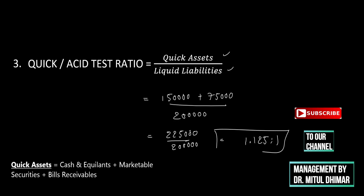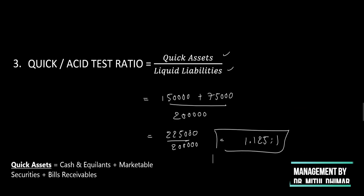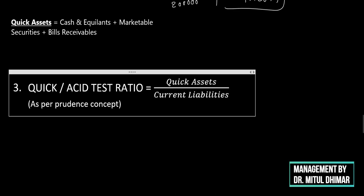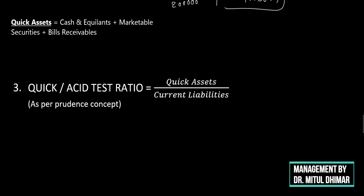Applying the prudence concept, the formula becomes quick assets divided by current liabilities. Quick assets are 2,25,000 and current liabilities are 2,85,000, giving a quick ratio of 0.7895 to 1.